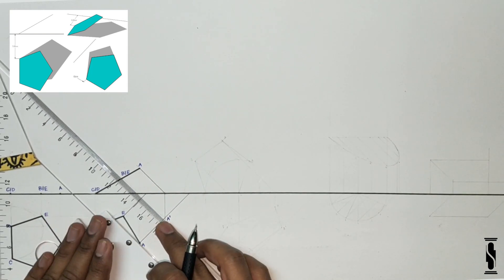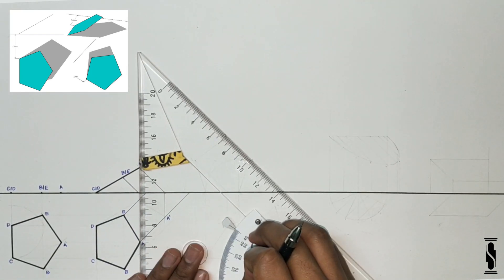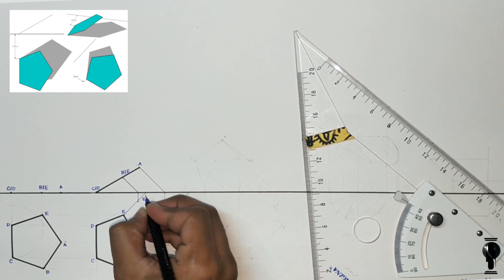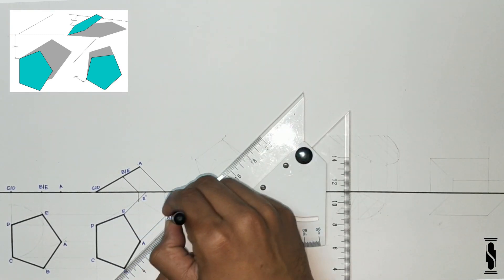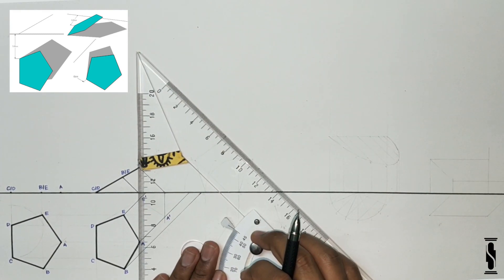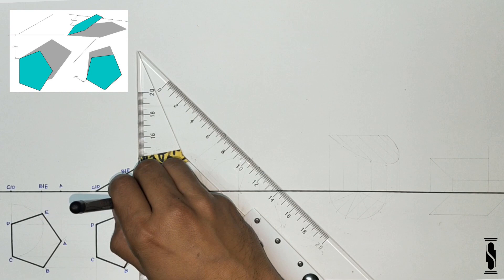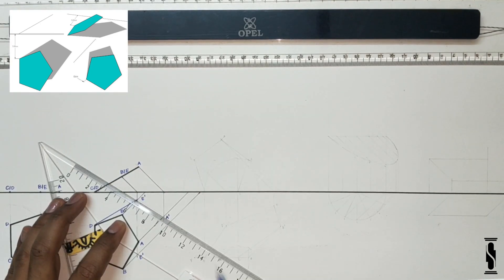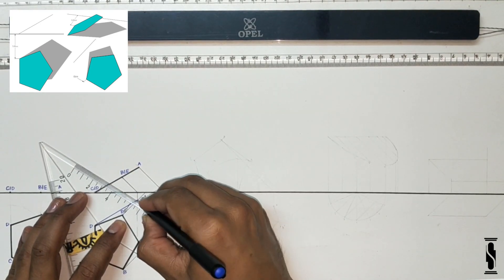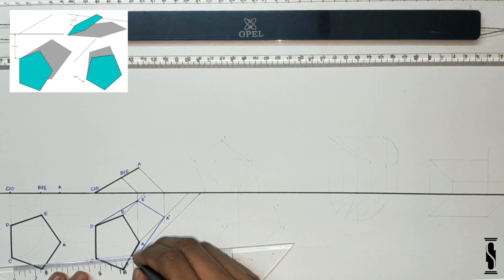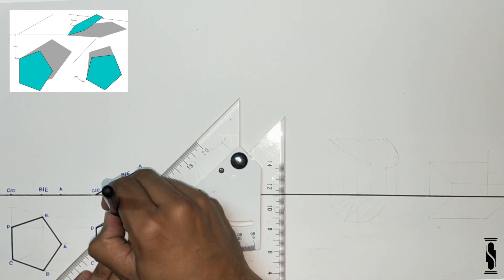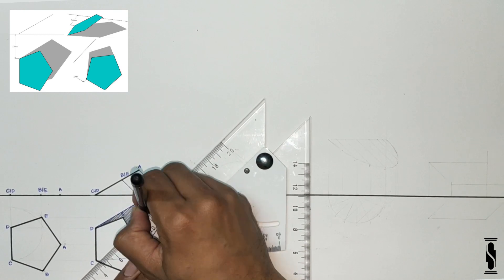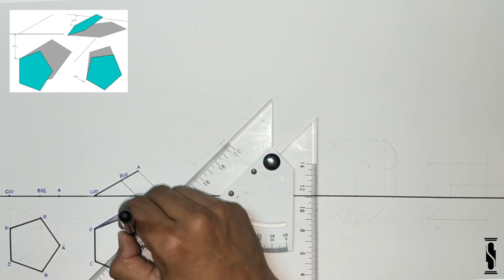Now repeat the same process for points B and E. Shadow of the plane will start from points C and D as it rests on HP. So join the points D, E dash, A dash, B dash and C to get the final profile of the shadow, and hatch it with light intensity lines. As you can see, some part of the shadow is hiding behind the plane, so there is no need to hatch that portion.